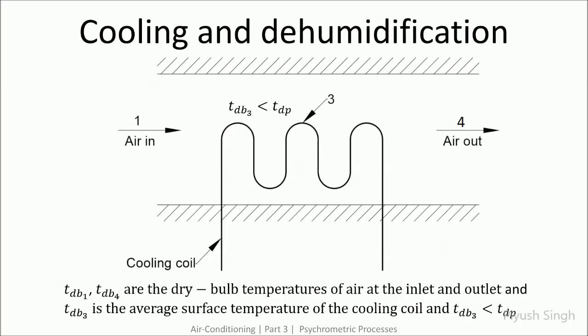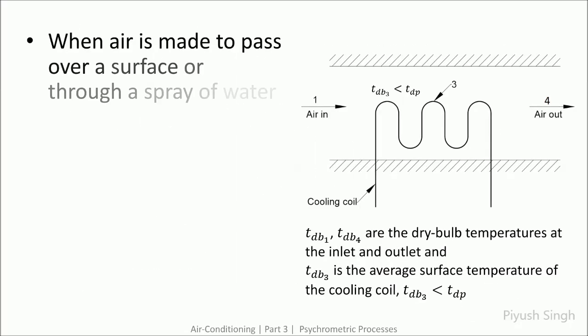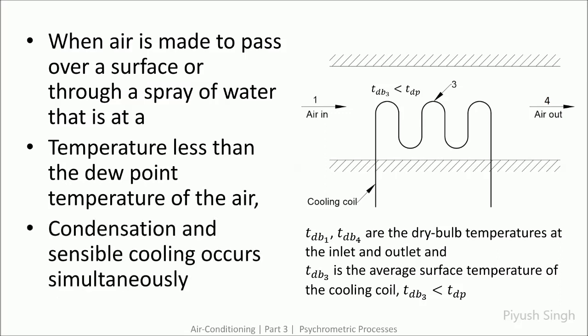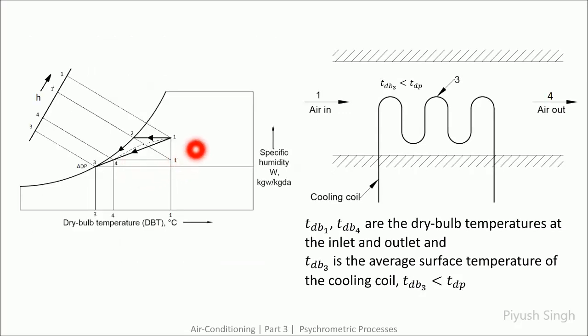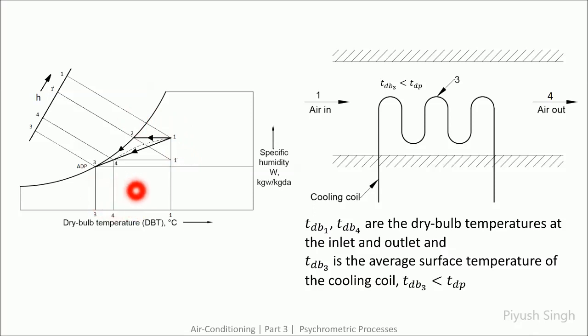The next process is cooling and dehumidification. Here, the coil temperature must be lower than the dew point temperature of the incoming air. When the air passes over this surface, condensation and sensible cooling occur simultaneously. On the psychrometric chart, this process is represented by a line connecting the apparatus dew point and the initial condition, with the final condition lying between these two points. In actual practice this may not be a straight line, but for simplicity of calculations it is assumed to be a straight line.